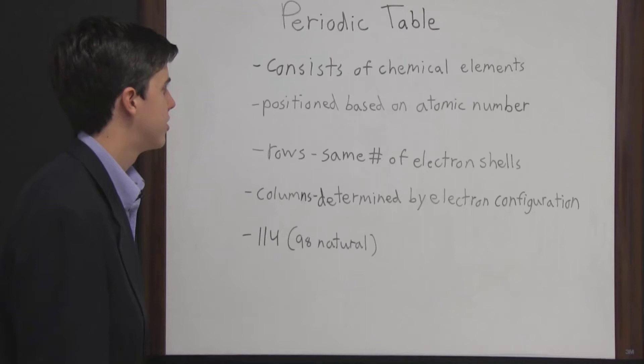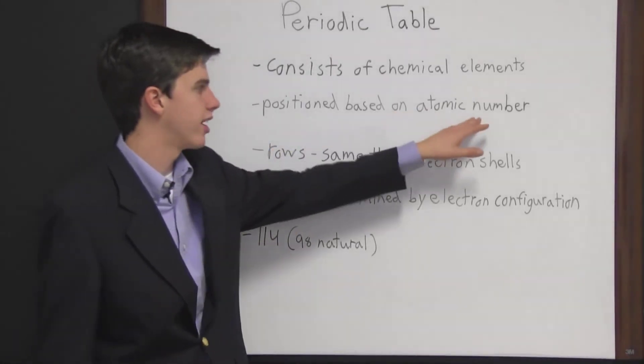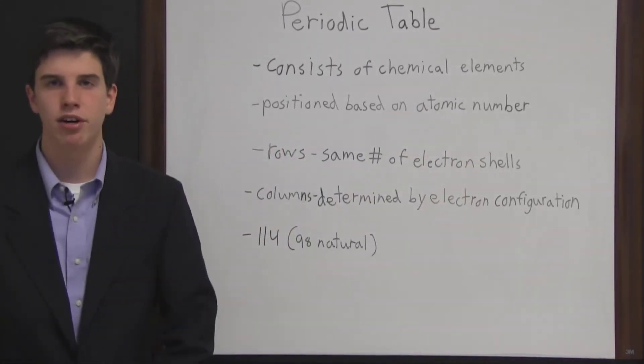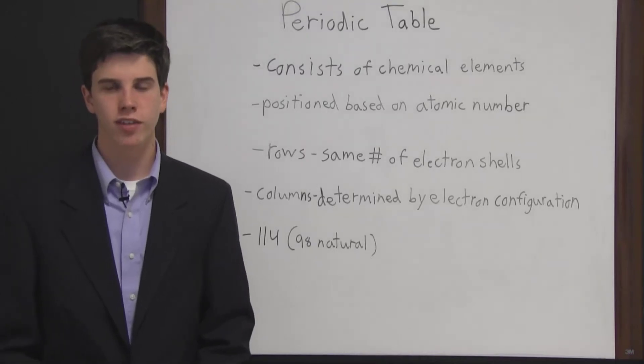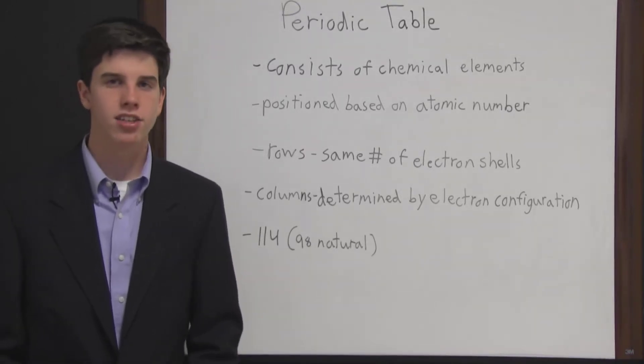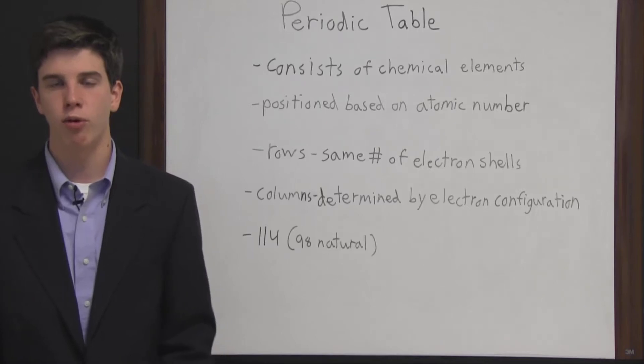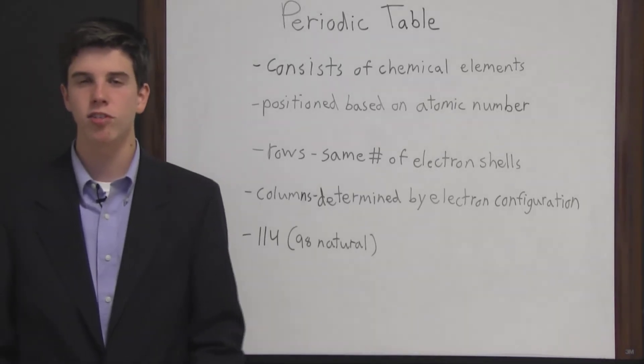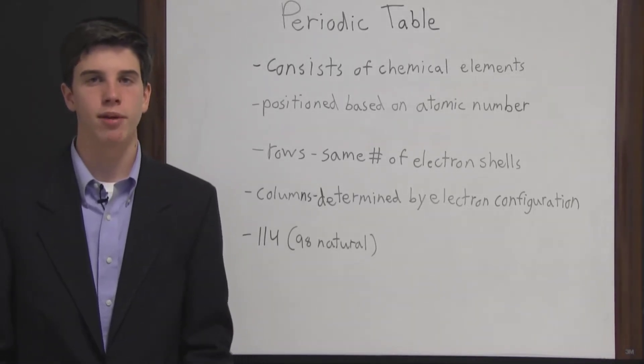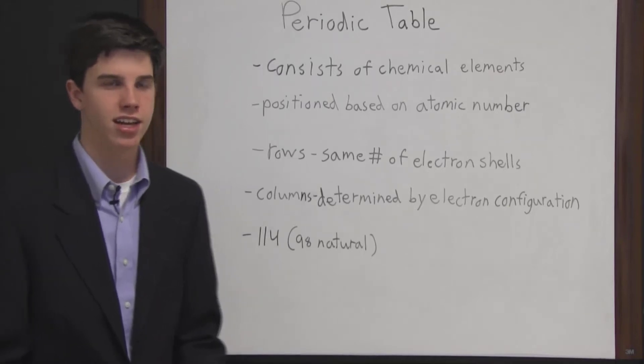The periodic table positions chemical elements based upon atomic number. An atomic number is the amount of protons an atom has in its nucleus. So hydrogen is the first element on the periodic table because it has one proton in its nucleus, and then the next chemical element has more protons in its nucleus.